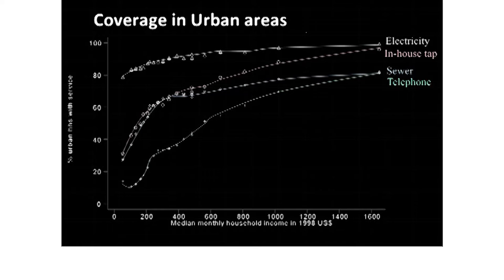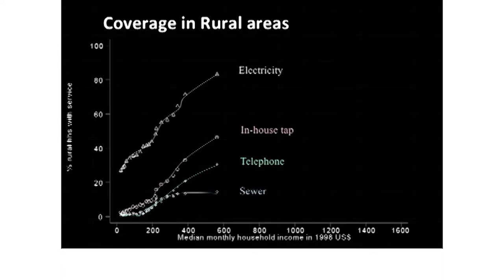Going back to the LSMS data and looking at coverage in urban areas: if you live in an urban area, most households have coverage of electricity, but this is not true for the other three infrastructure services. Piped water, telephone, and sewers all have very low coverage at low income levels. In rural areas, at low income levels, households have almost no piped water services, telephones, or sewers, but about a third of households at the very low end of the income distribution do have electricity coverage.